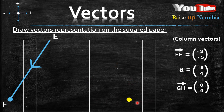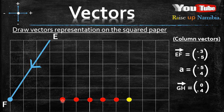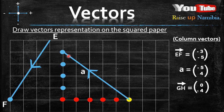How about this one? Let's choose a starting point, then we focus first on the x-axis. For the x-axis we are given a negative 5, which means we'll move five lines to the left: one, two, three, four, five. For the y-axis we are given a positive 4, meaning we'll be moving four lines up because the four is positive: one, two, three, four. Then we draw a line from our start point to our end point, label our vector, and just like that we are done.